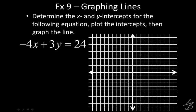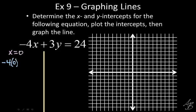Draw a line down the middle for this example — on one side we'll do the X-intercept, on the other side we'll do the Y-intercept. We'll start with X equals zero. For X equals zero, the equation is going to look like: negative four times zero plus three Y equals 24. The negative four times zero is going to go away, so what we really have is three Y equals 24.